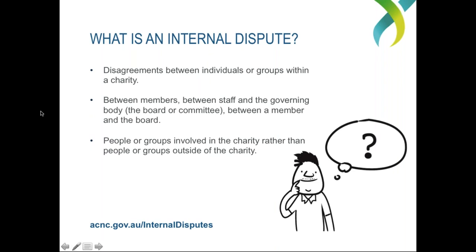When we talk about an internal dispute at the ACNC, we're talking about a disagreement between individuals or groups within a charity. That can be fairly broad. Disagreements may be between members of the charity, between people on the governing body — that is the board or the committee — or between staff and the members. Disagreements can range from things that are relatively minor up to significant issues. Sometimes they're easily resolved; other times it can take years to resolve and can be really intractable. But it's important to point out the internal aspect — these disputes take place within a charity, not involving the general public or donors. It's the people involved in the charity, from board level to staff to volunteers.